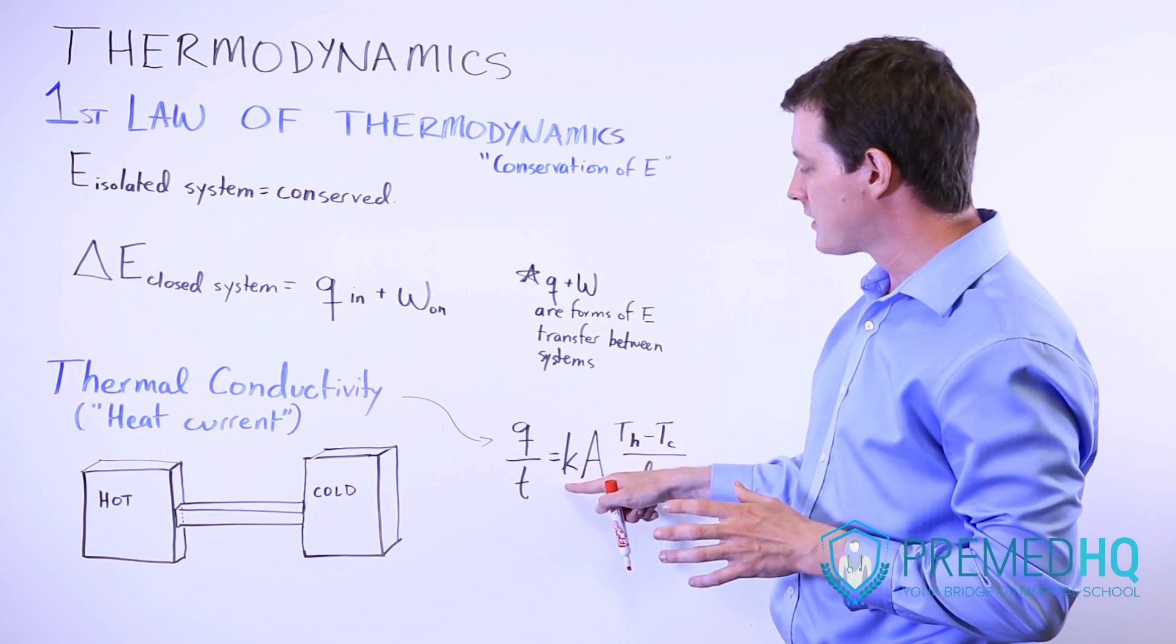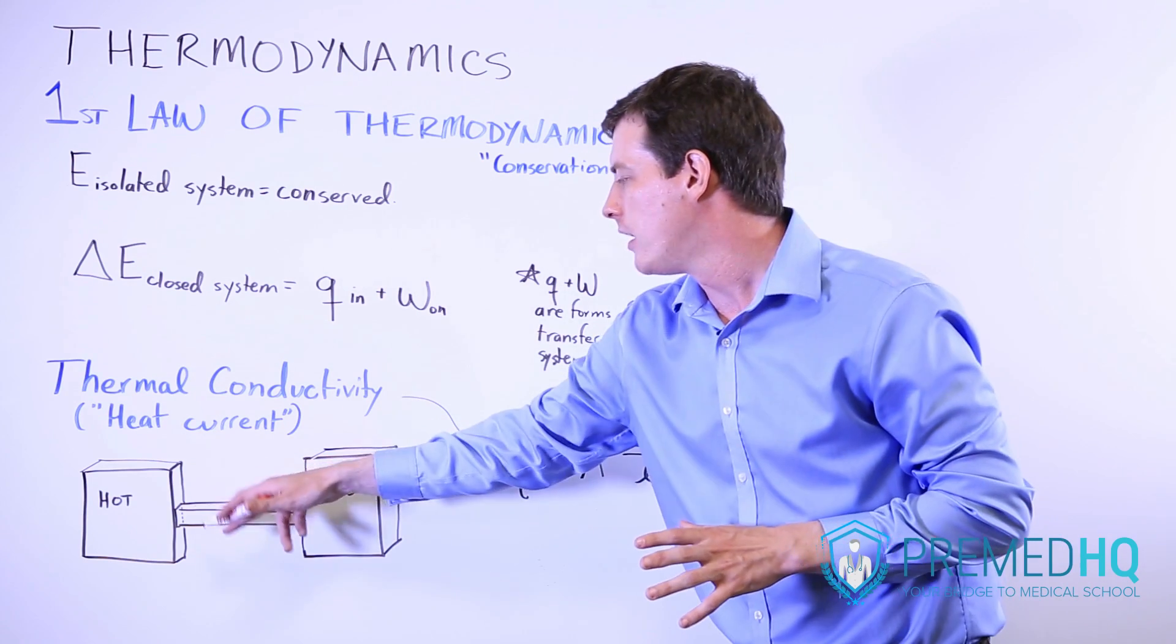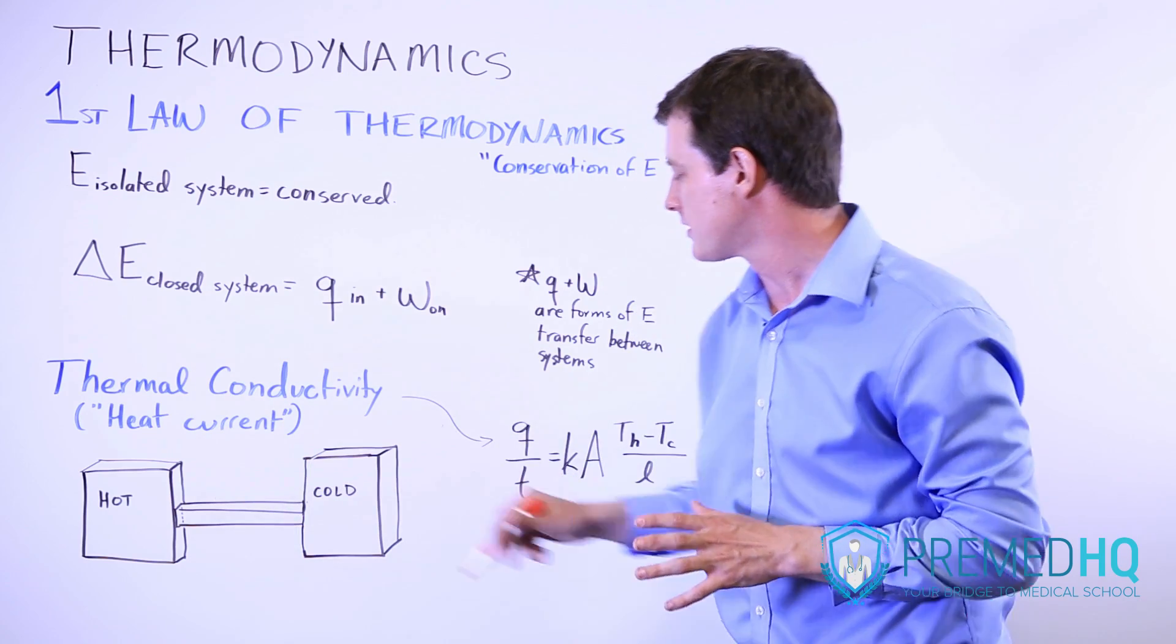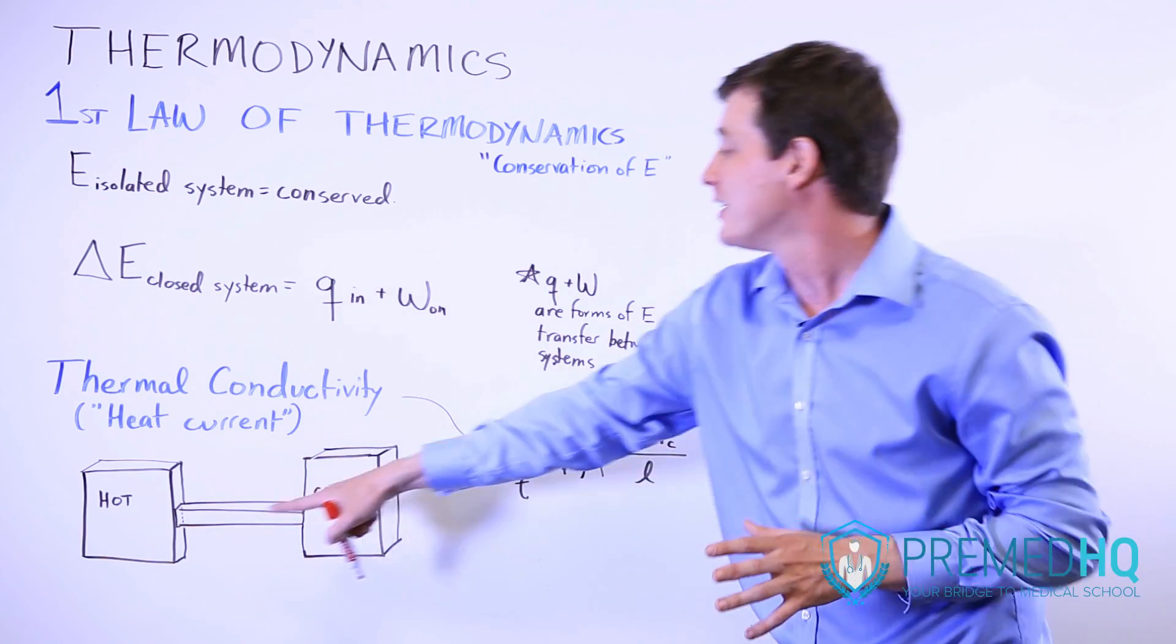So you look at K, which is some constant that is a property of the material of the slab, and then the cross-sectional area here.